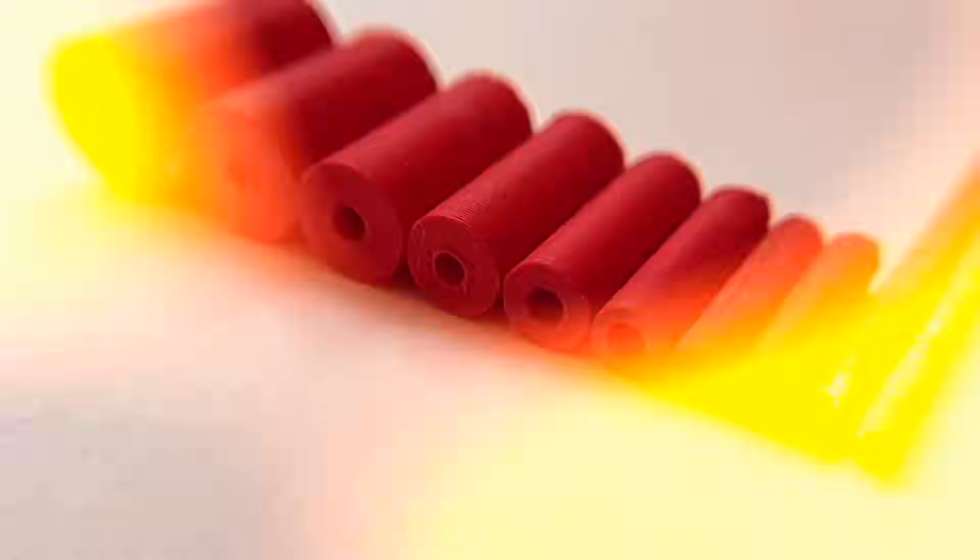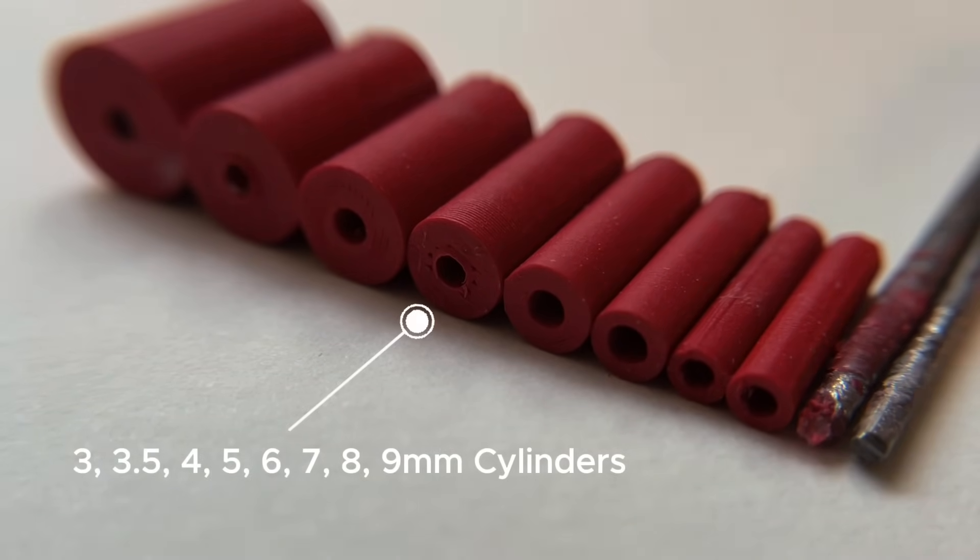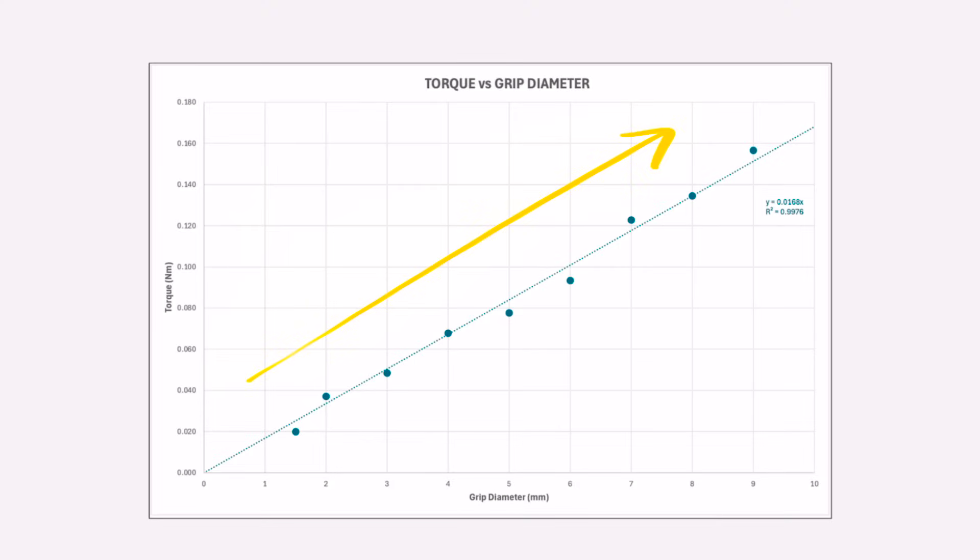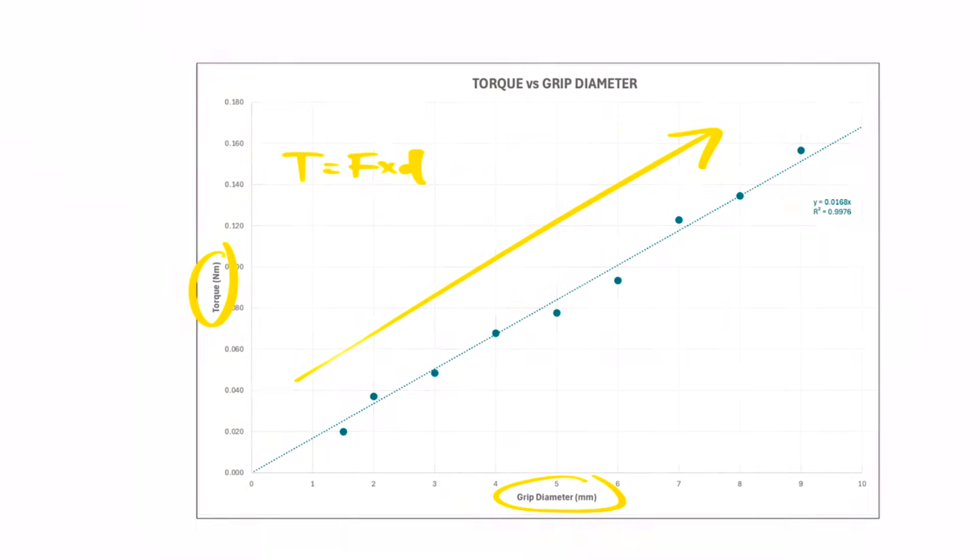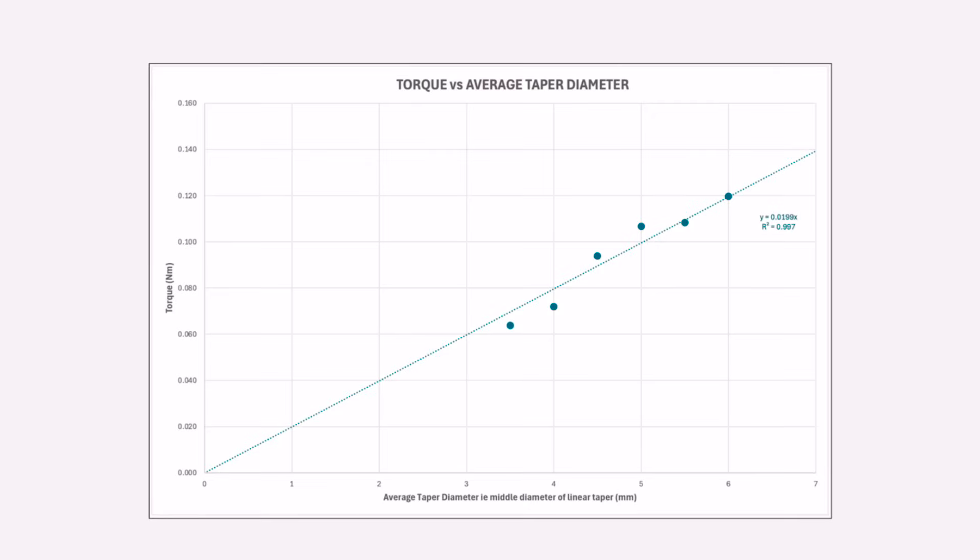First, I wanted to test how diameter affected torque. I tested some 1.5 and 2mm diameter wire, and 3D printed cylinders from 3 to 9mm. And the results are probably what you would expect. A nice linear relationship between diameter and torque. This makes sense because of our torque formula from earlier. Torque equals force times distance. And it seems this principle also extends to tapered grips. The larger the average diameter, the more torque they generate.